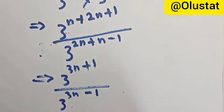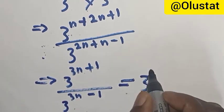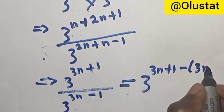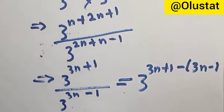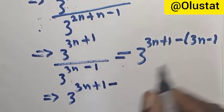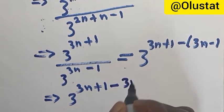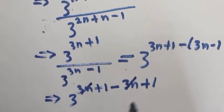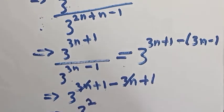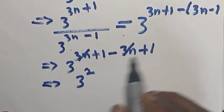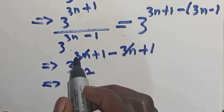Now, let's apply the division law of indices: this equals 3 raised to power (3n plus 1) minus (3n minus 1). Let's open this bracket: 3n plus 1 minus 3n — minus times minus becomes plus — so we get minus 3n plus 3n, and plus 1 plus 1. The 3n terms cancel: plus 3n minus 3n equals zero.